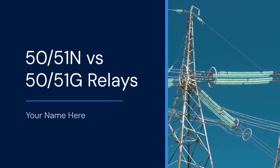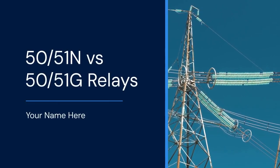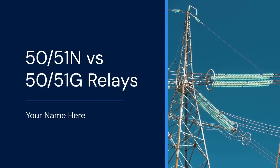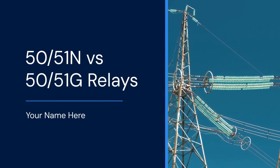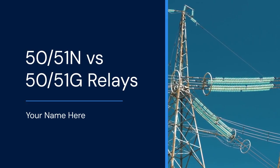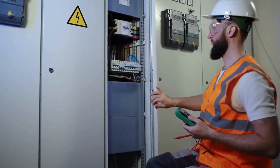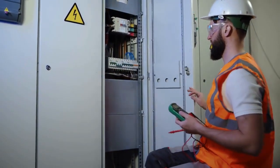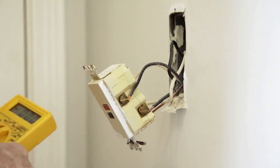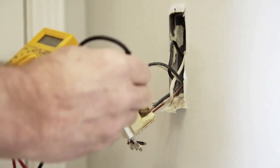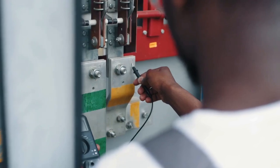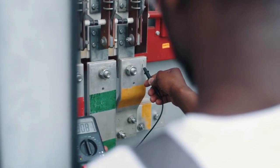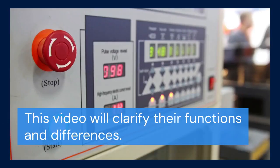Hello everyone. Today, we're tackling a tricky topic in electrical protection: the difference between 50-51N and 50-51G relays. These relays are crucial for detecting earth faults in electrical systems. They protect equipment and personnel from dangerous ground currents. Many people get confused between them. This video will clarify their functions and differences.